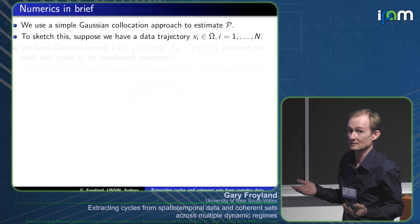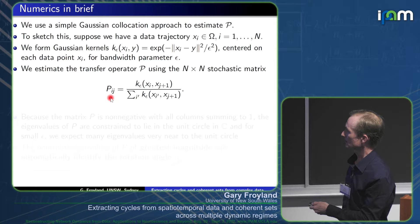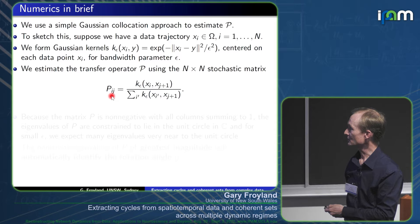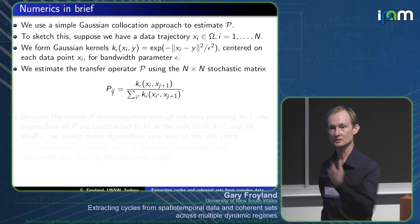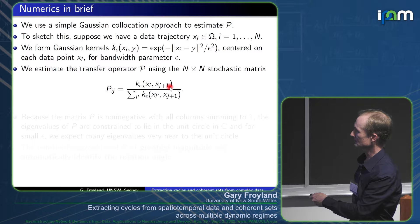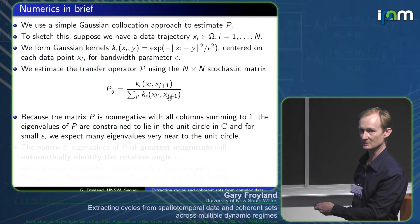For the numerics: suppose you have a data trajectory x_i. Around each data point you make a Gaussian kernel of some small diameter. You create an N×N matrix — N is the length of your trajectory — where p_{ij} is the conditional probability that data point j goes to data point i: if you advance j by one step you get x_{j+1}, and if that is nearby x_i, the kernel has high value. The denominator is a normalization so columns sum to one, making a Markov transition matrix.